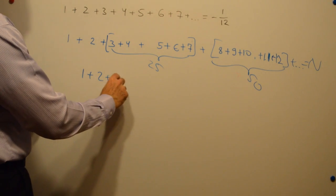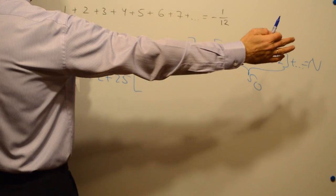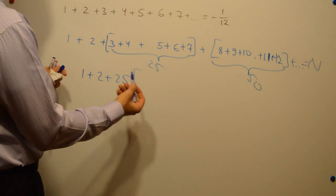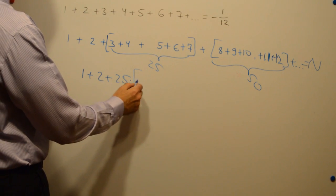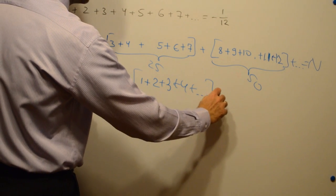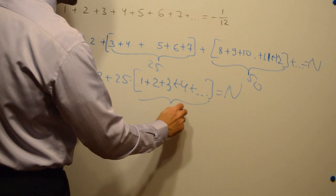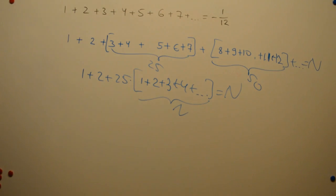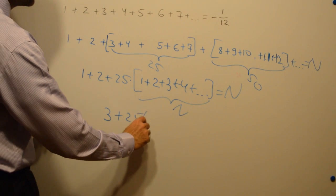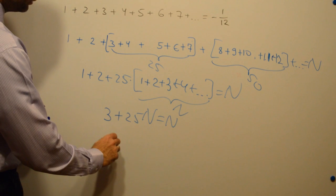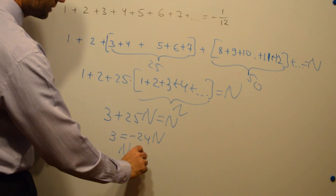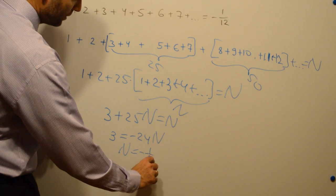So 1 plus 2 plus 25 and we can factorize this expression. This infinitely long expression in 25 times 1 plus 2 plus 3 plus 4 etc equals n. And again we get this n in brackets. And very simple equation leads us to an answer that n again equals minus 1/8.